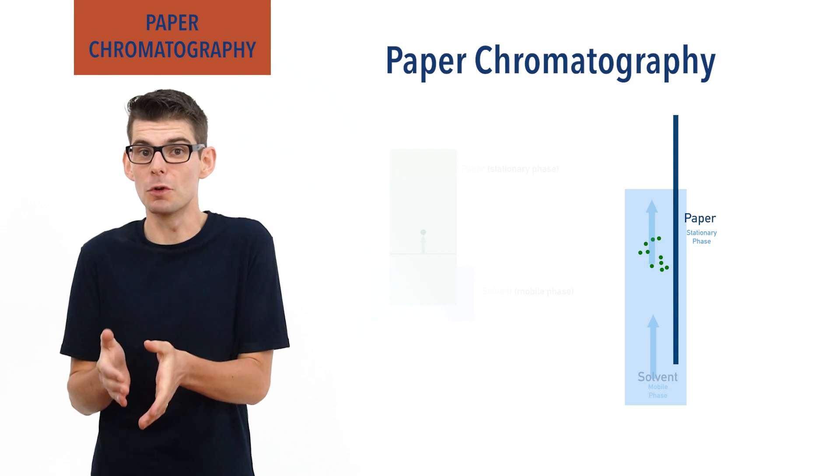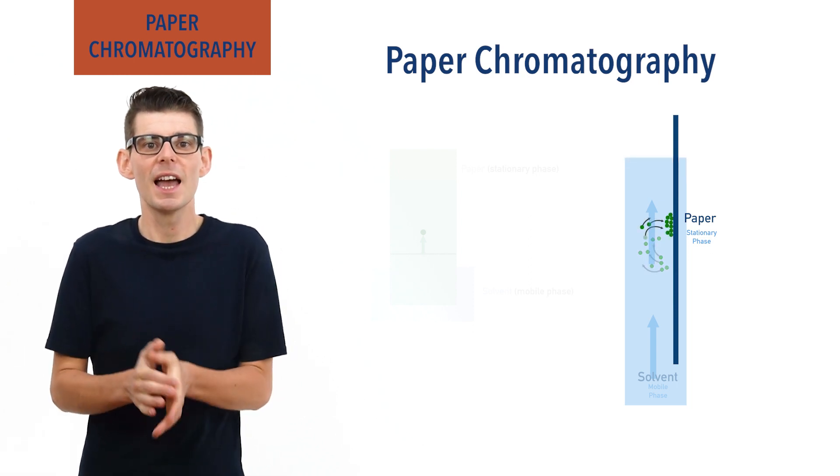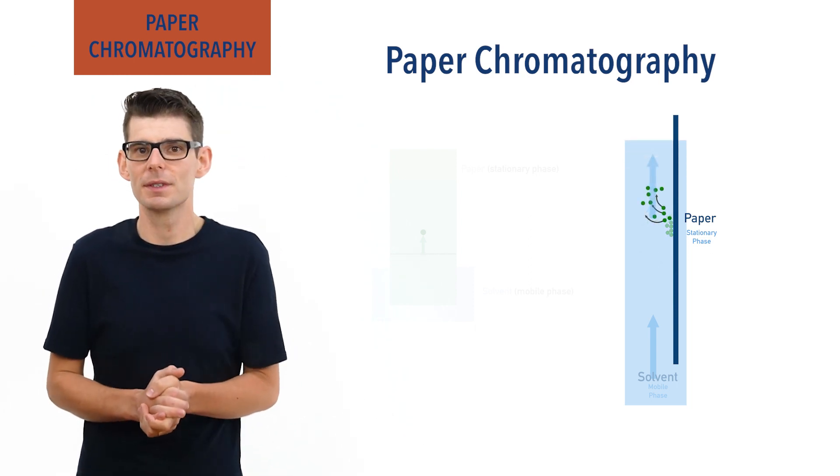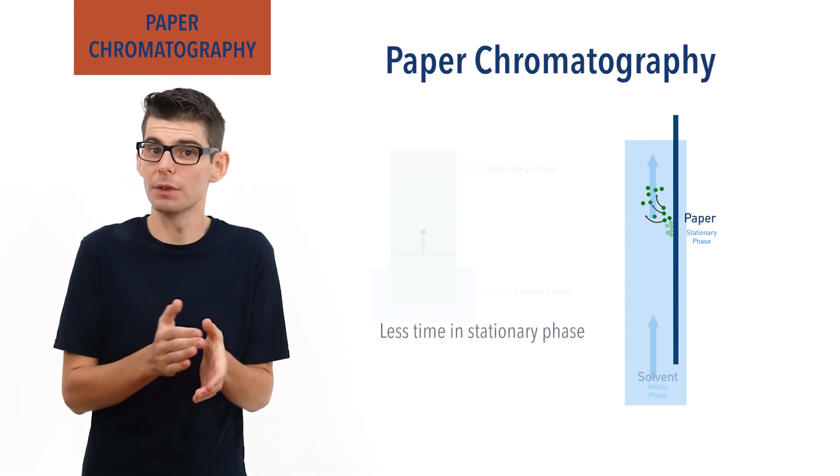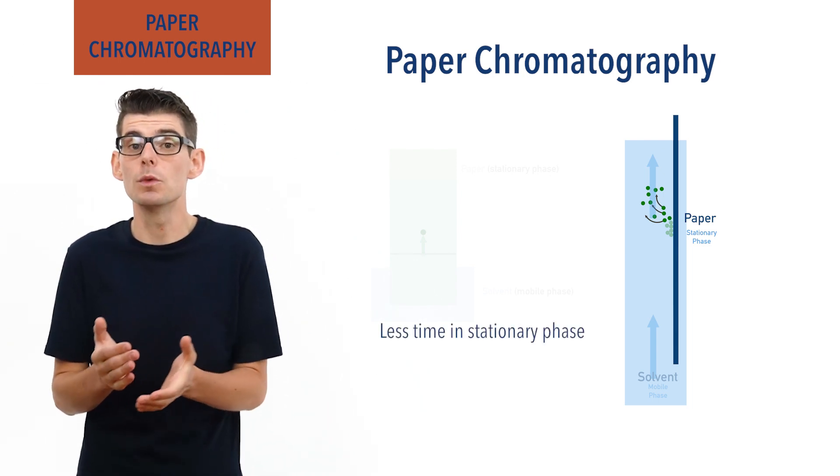They will then temporarily absorb back onto the stationary phase again and repeat the process upwards. The less time the substance spends in the stationary phase, the faster it will move up the paper.